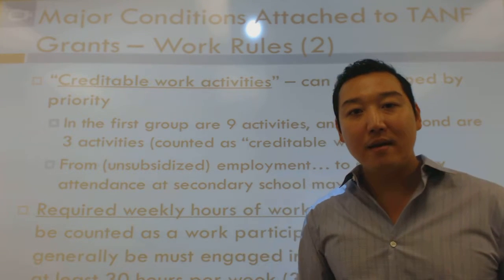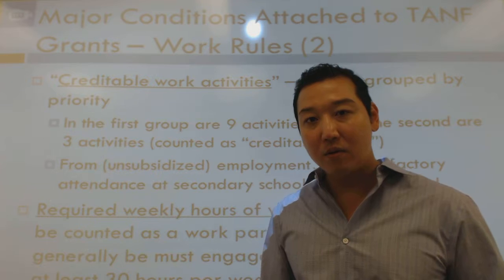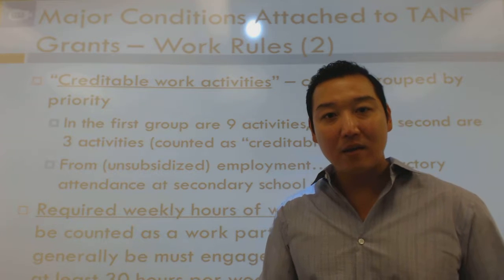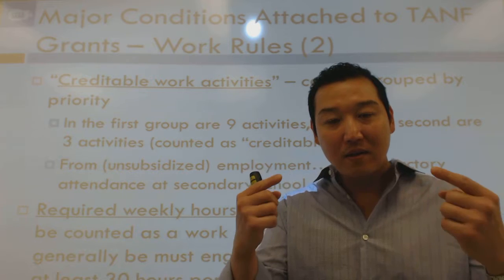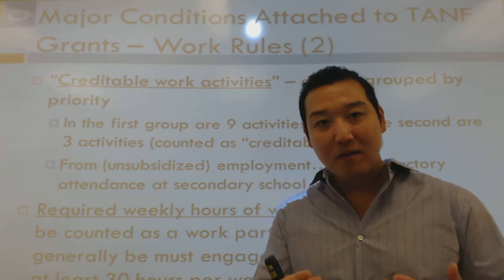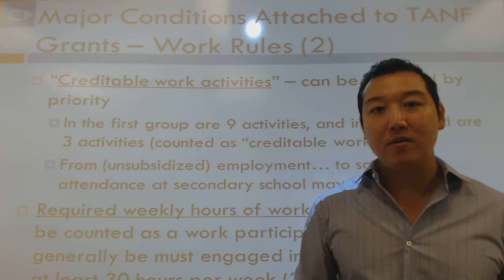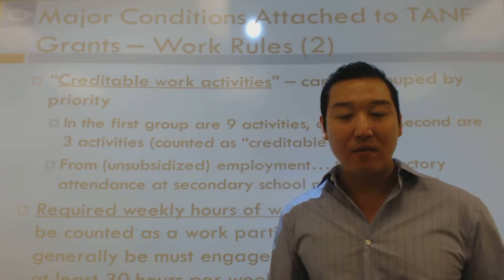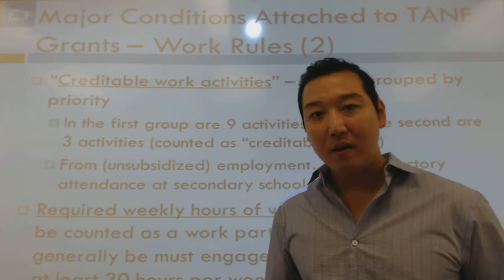The federal government lists 12 different activities that count as work, in order of priority from unsubsidized private employment at the highest level down to secondary school attendance. All families must work at least 30 hours per week; two-parent families receiving welfare must work 35 hours.